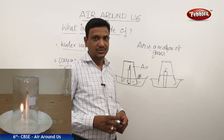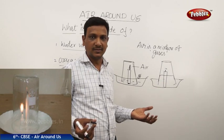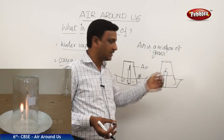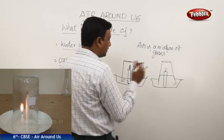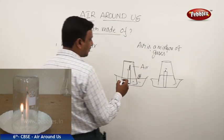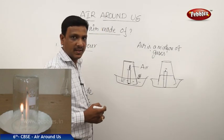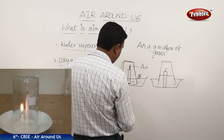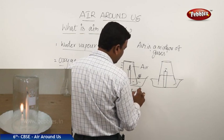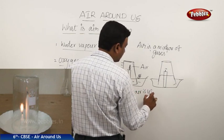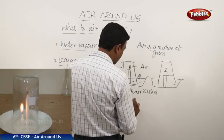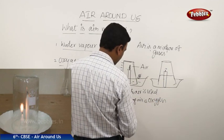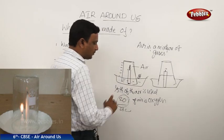The candle consumed oxygen; oxygen is used up, so that area is empty and is filled by the rising water level. From this we understand that air consists of oxygen which is important for burning. If you put a graduation marking on the glass, you will find that one-fifth of the air is used — that means 20% of air is oxygen, generally denoted as 21%.